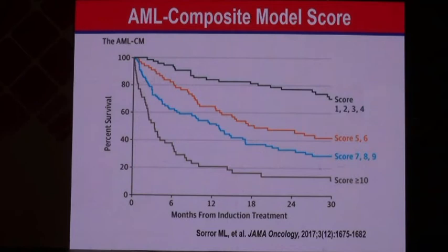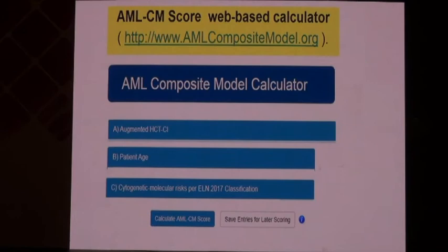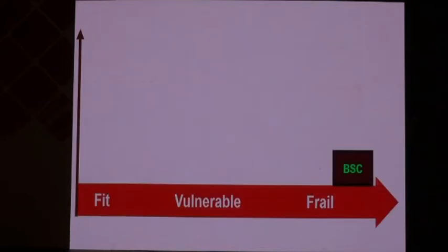Based on this model, they identified groups with different outcomes — very favorable outcome with a score up to 4, and very poor outcome with a score above 10. You can go to the website, enter your patient data, and get the composite model score. Patients thus show very variable fitness levels.